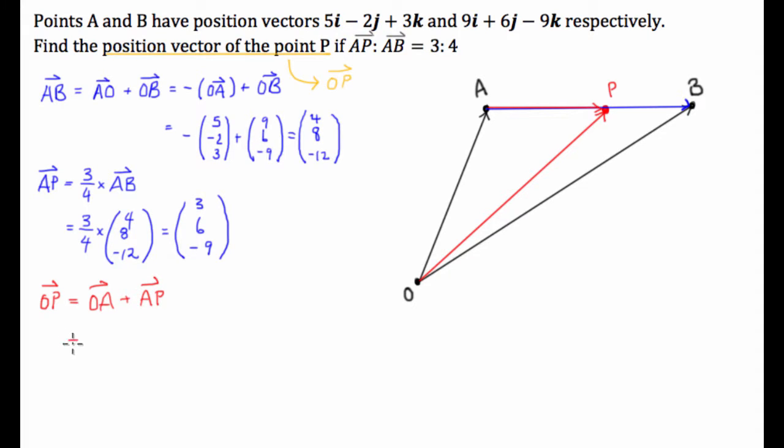And that's going to be equal to, well, our OA we have up here, it's just written, 5, negative 2, 3. And to that, we're going to add this one we've just found, AP, 3, 6, negative 9.